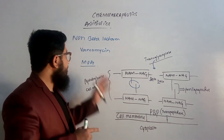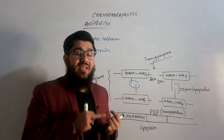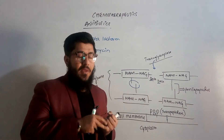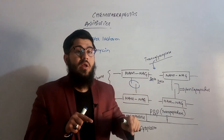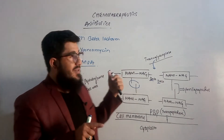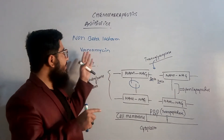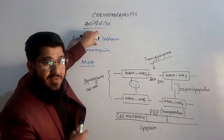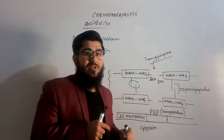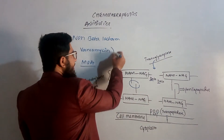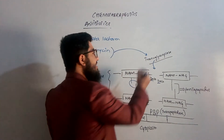Now let's come towards the mechanism of action of vancomycin — how this drug does its job. Vancomycin is actually a cell wall synthesis inhibitor. We mentioned that we have beta-lactams and non-beta-lactams, and all these inhibit the cell wall. Vancomycin is classified as a non-beta-lactam because it does not have the beta-lactam ring in its structure. Coming to the mechanism: vancomycin will actually target the enzyme transglycosylase and inhibit it.